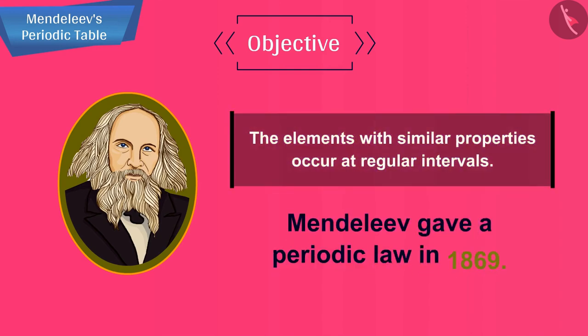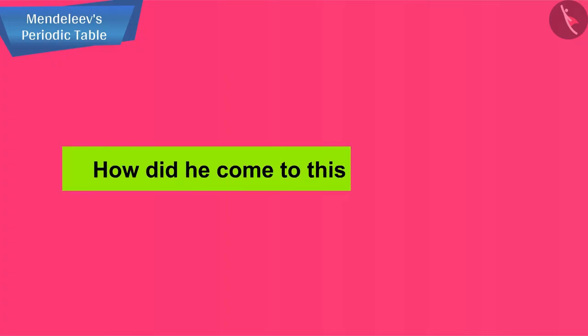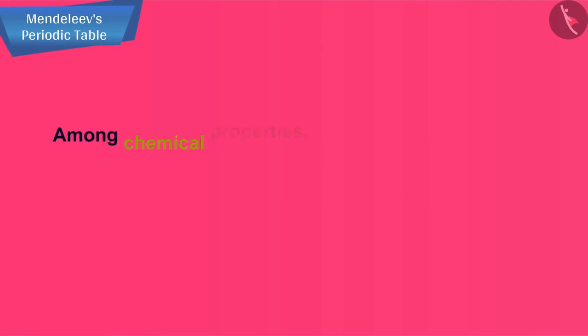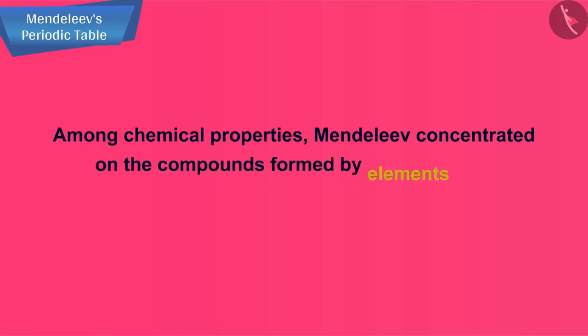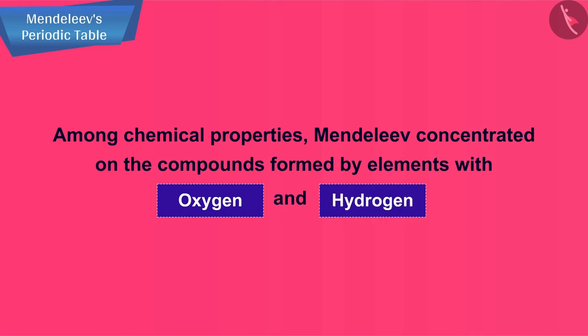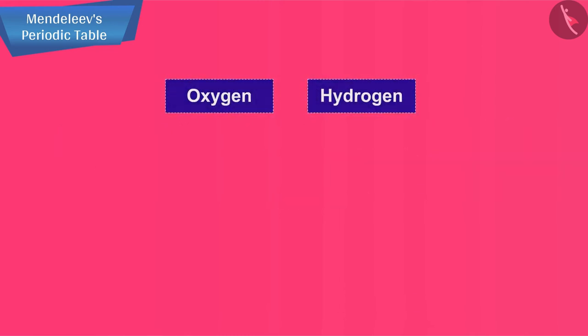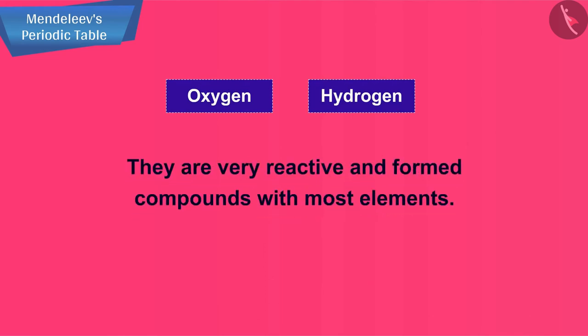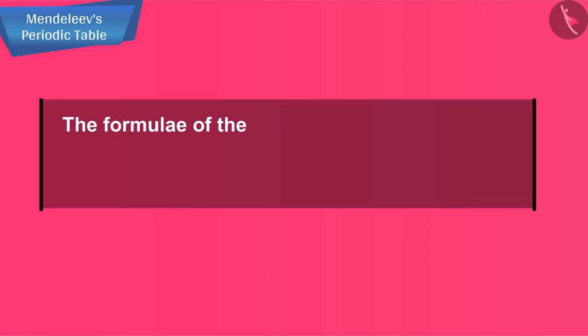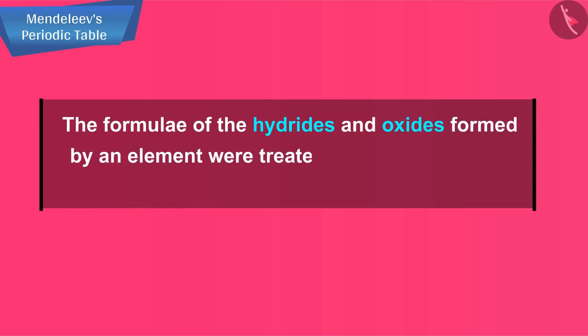How did he come to this periodic law? Among chemical properties, Mendeleev concentrated on the compounds formed by elements with oxygen and hydrogen. He selected hydrogen and oxygen as they are very reactive and formed compounds with most elements. The formulae of the hydrides and oxides formed by an element were treated as one of the basic properties of an element for its classification.